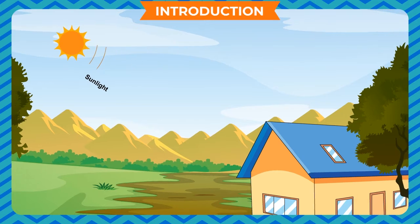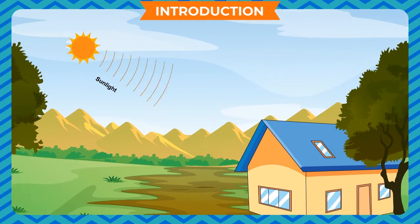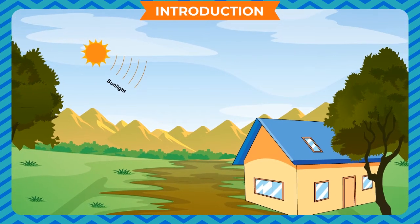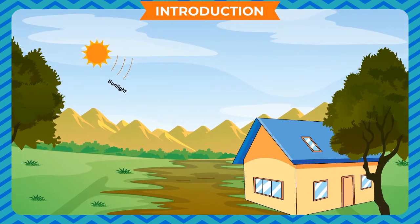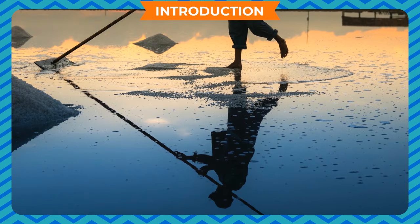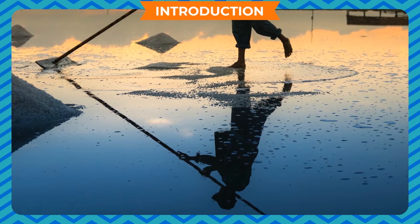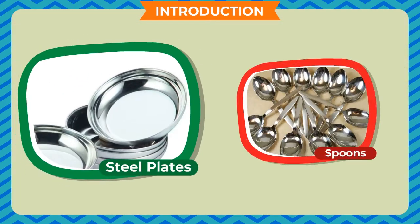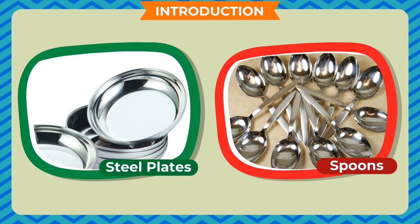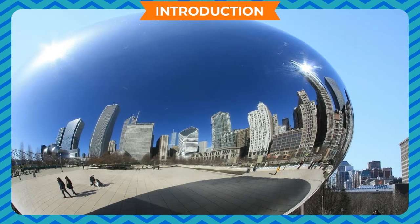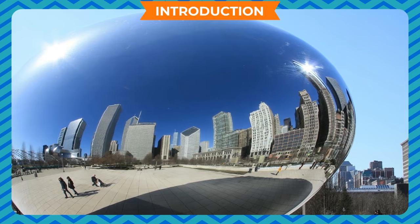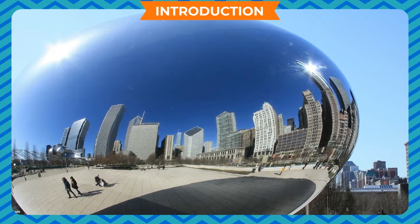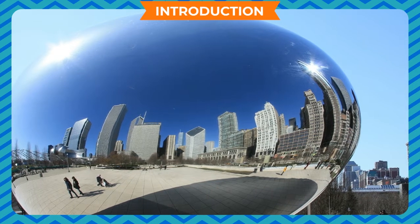Introduction: Light is a form of energy which gives us the sensation of sight. You can even see your image in water, steel plates, spoons, etc. You will appreciate the fact that images are visible only on polished surfaces.